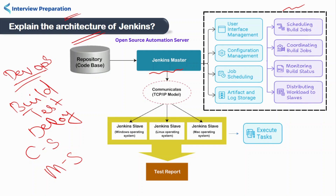The master node also stores all the build artifacts and logs. On the other hand, the slave node is responsible for executing the tasks assigned by the master node and reporting the results back to the master node. Jenkins takes the code from the Git repository and gives it to the slave jobs for execution.